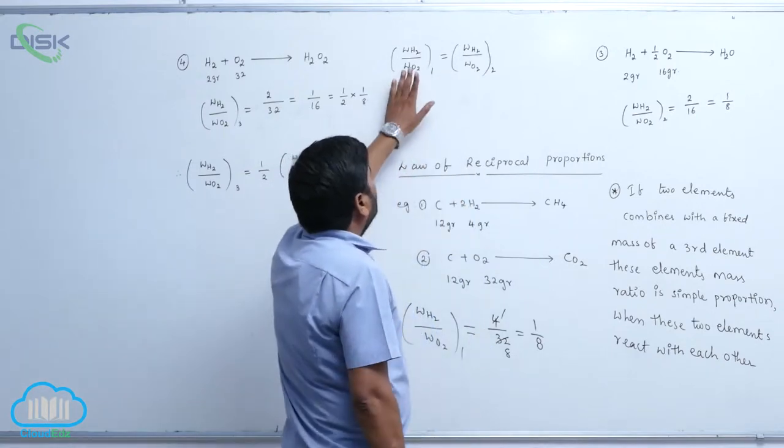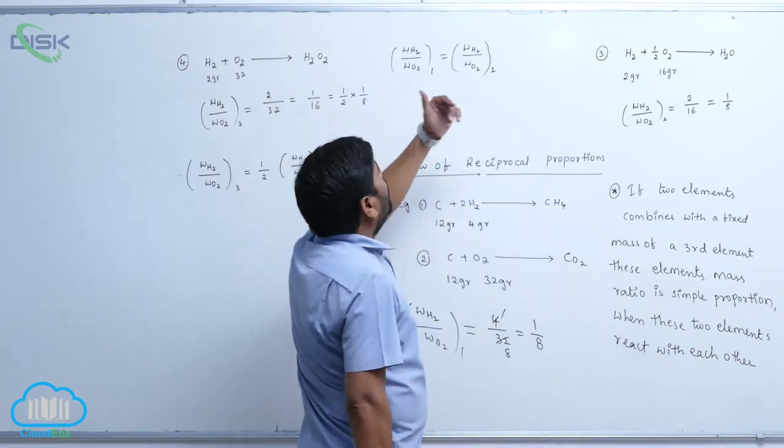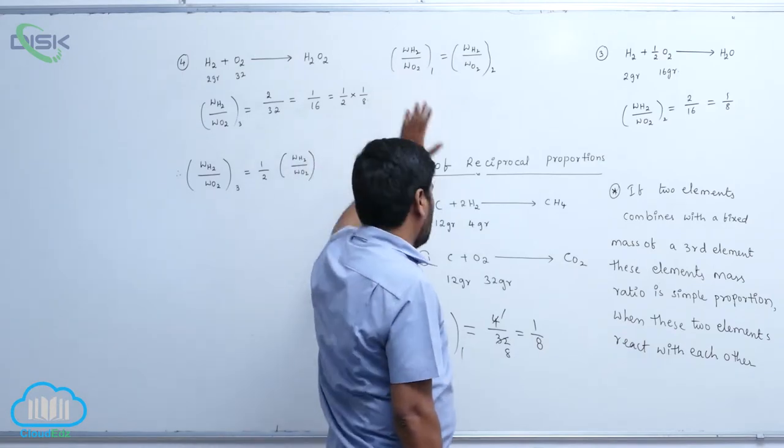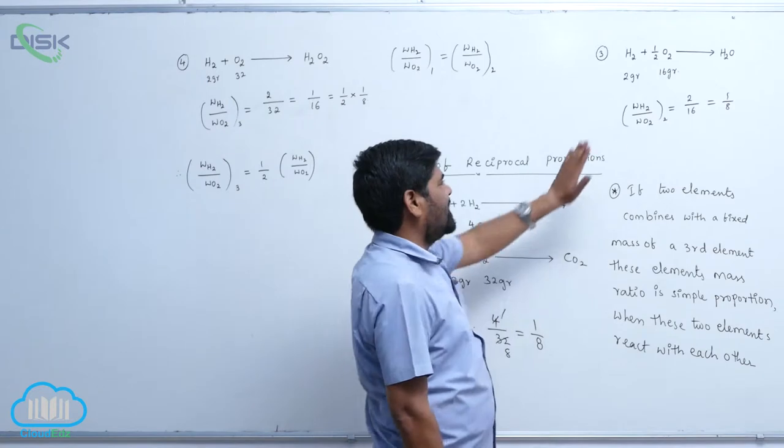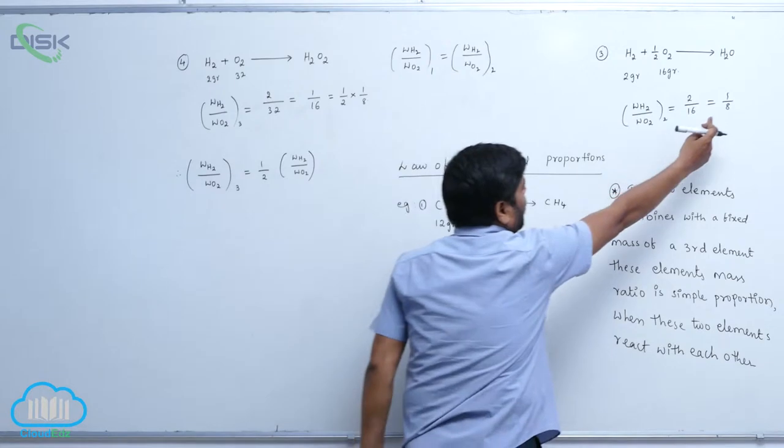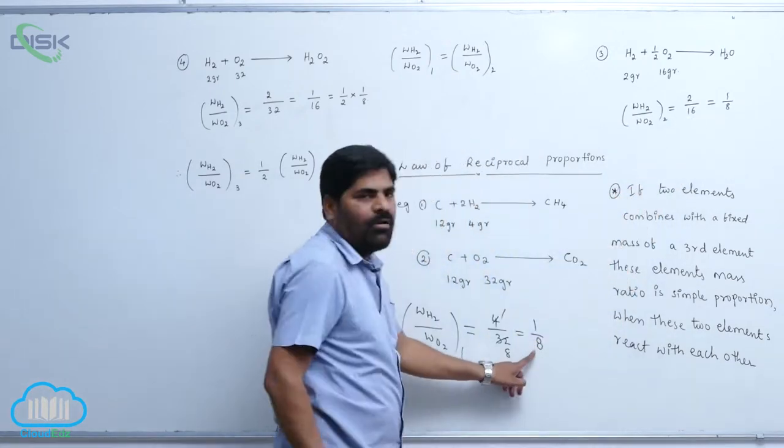Therefore, both the mass ratio of hydrogen and oxygen in this process and this process are equal. That is the reason why here is 1 by 8, and here is also 1 by 8.